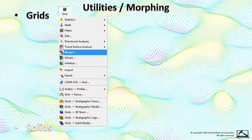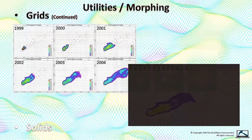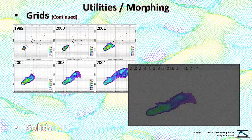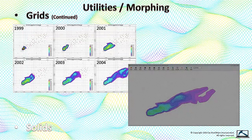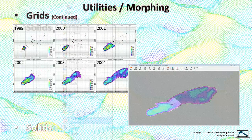Grid morphing is performed by selecting the Morph option from the Utilities Grid menu. You will be presented with a menu asking for the names of the grids that represent the starting and ending models. The result is very interesting, especially if you're patient enough to let the program interpolate lots of transitional grids. This is not something that you want to do with an old computer.